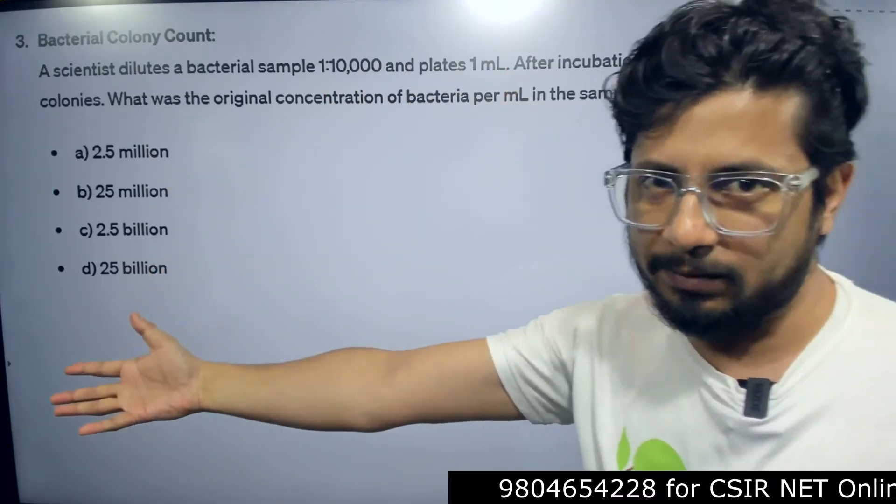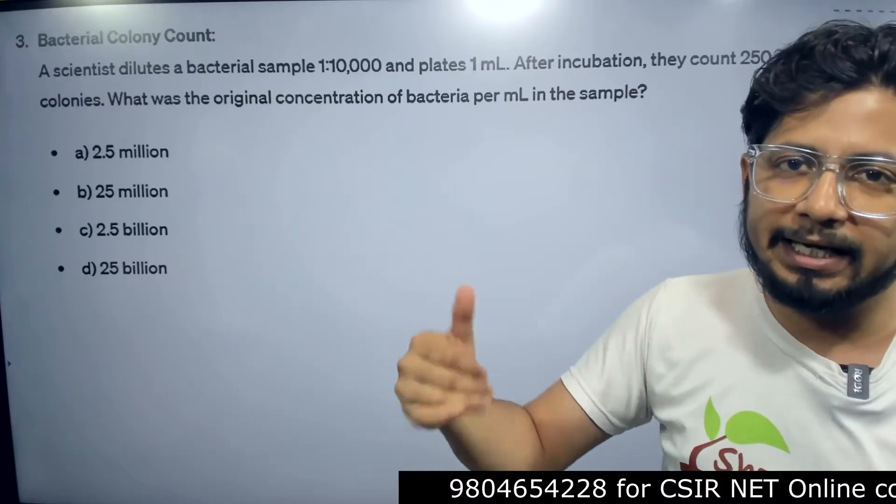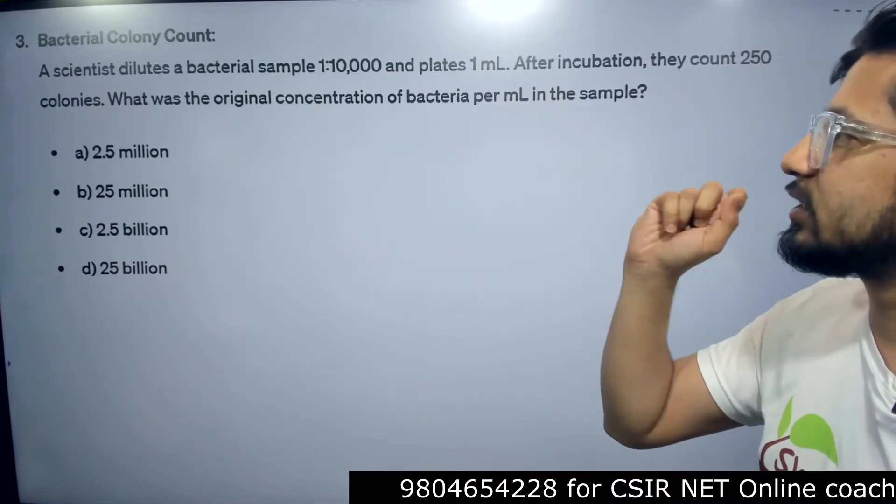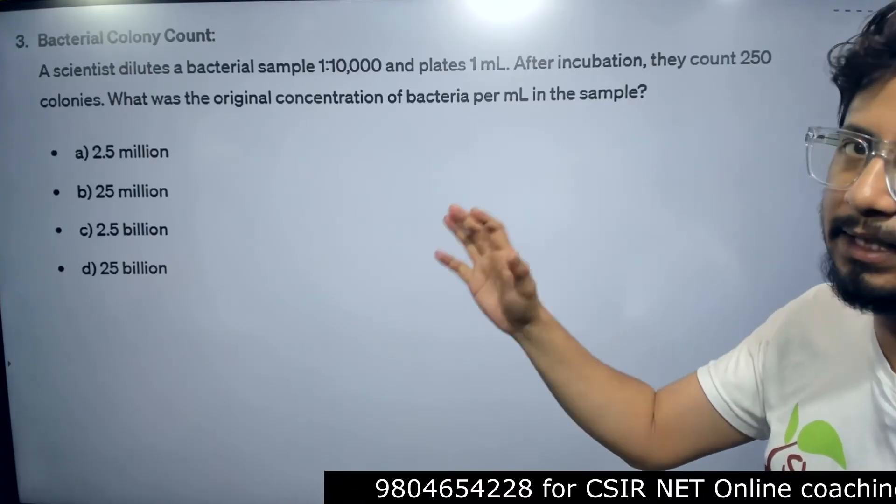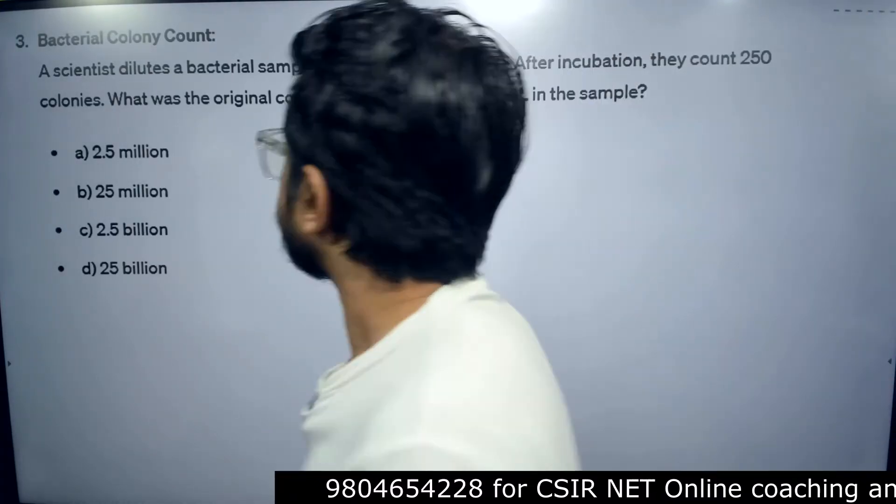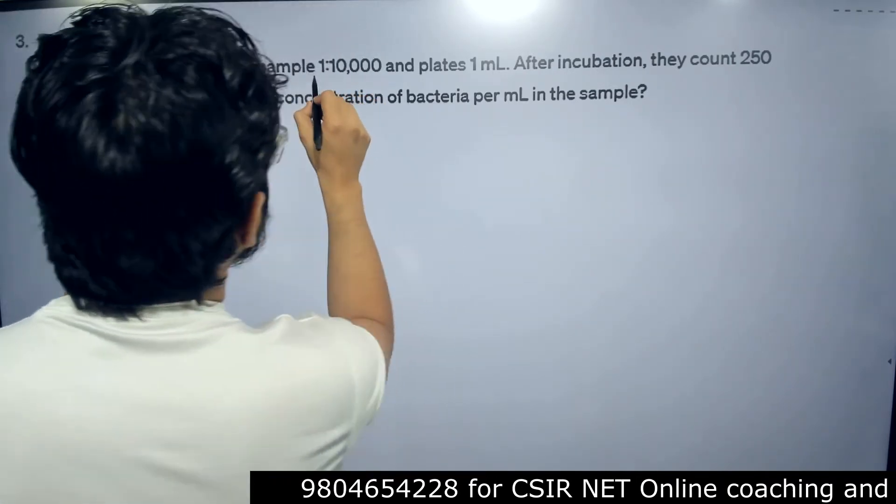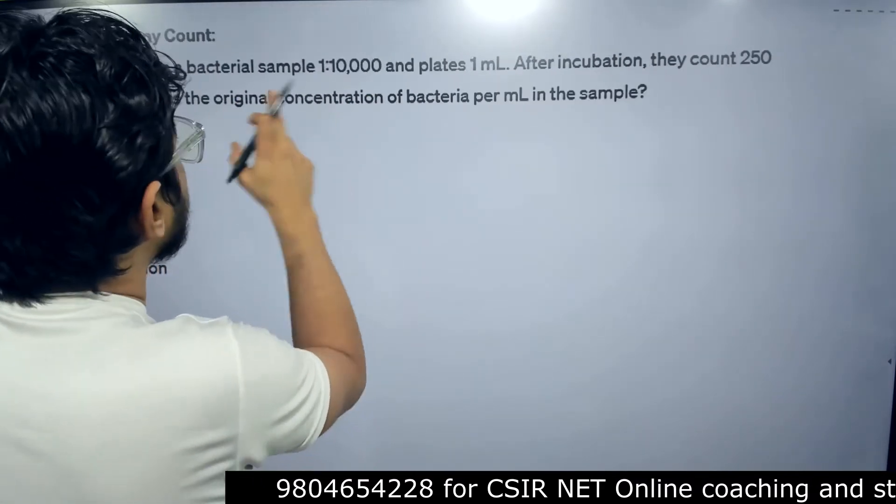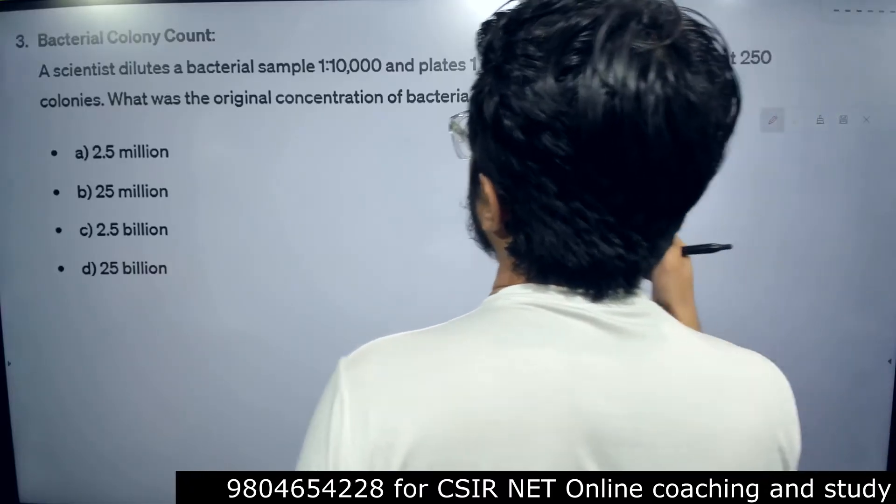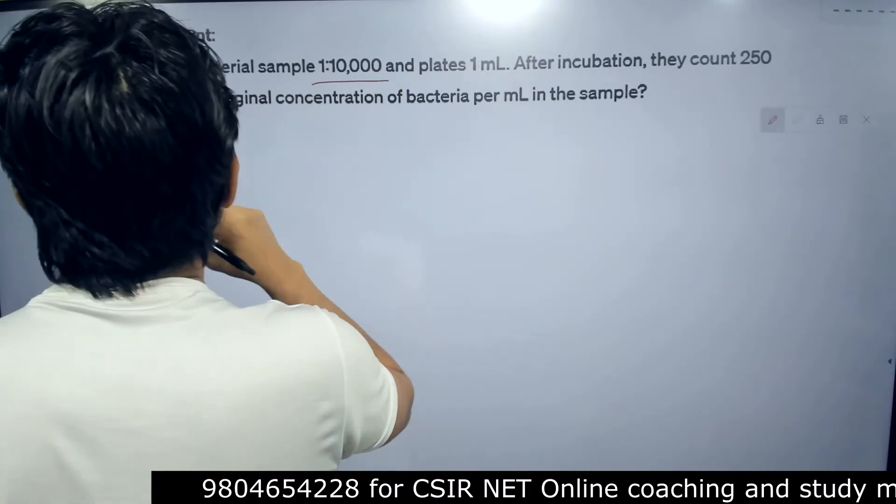Then we understand the rest of the things. But here, the serial dilution was done in 1 ml and we need to know the original concentration in 1 ml. So there is no big problem for that. If that is the case, 1 is to 10,000. 1 is to 10,000, this is the serial dilution.